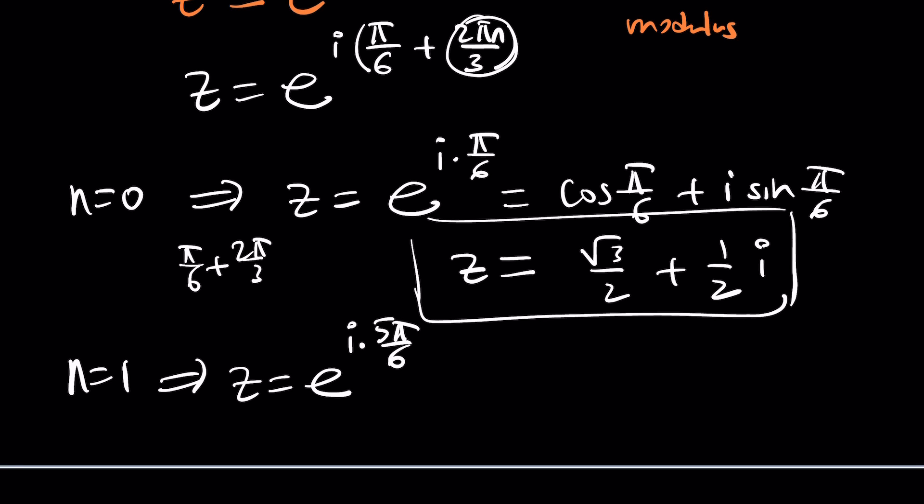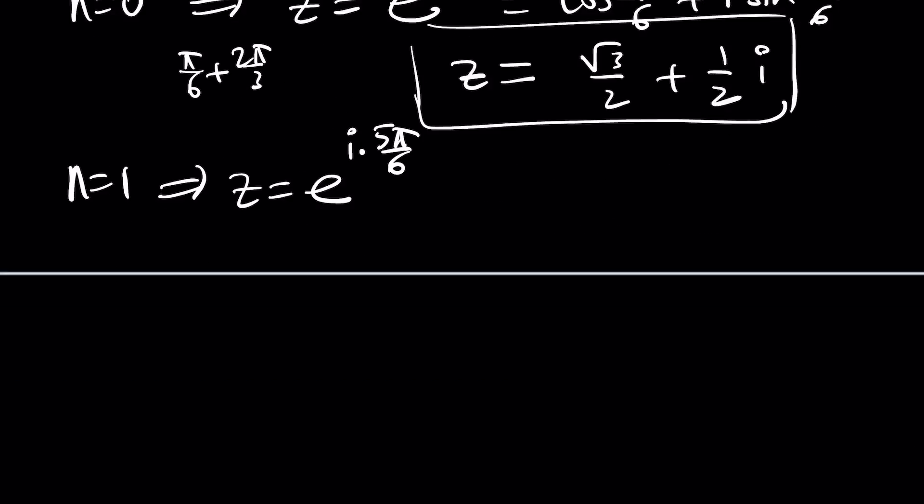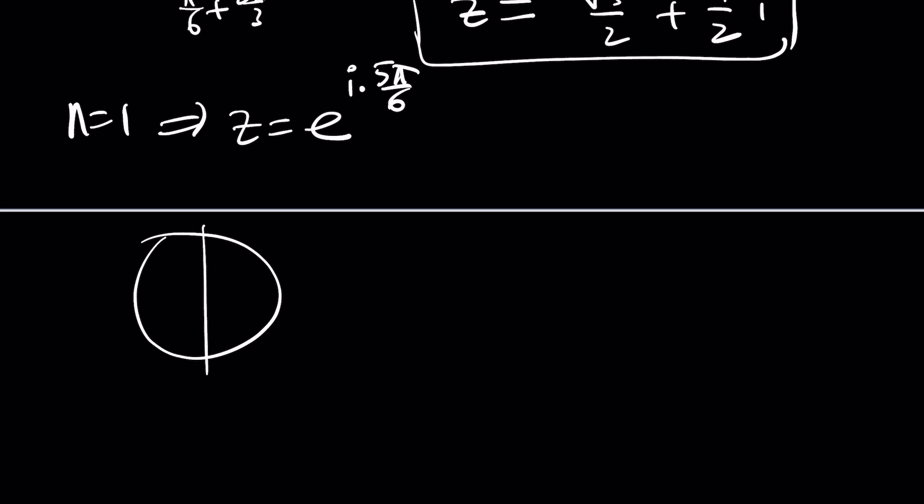And five pi over six is basically just pi over six short of pi. So it's something like that and if you look at the cosine and sine values you'll get the idea. Cosine of five pi over six is going to be negative because you're in the second quadrant. It's going to be negative root three over two but the sine is still positive and that would be one half i.